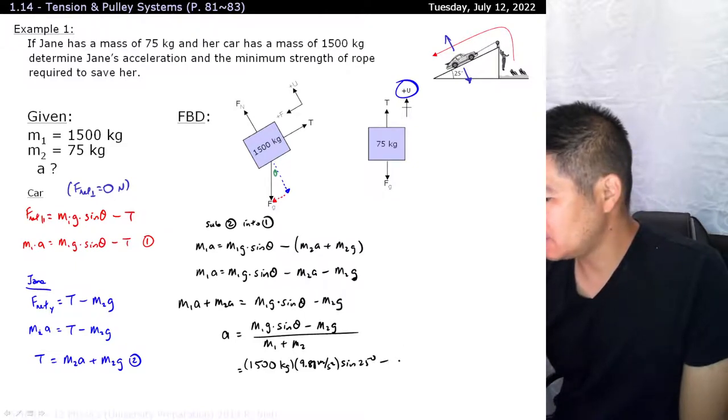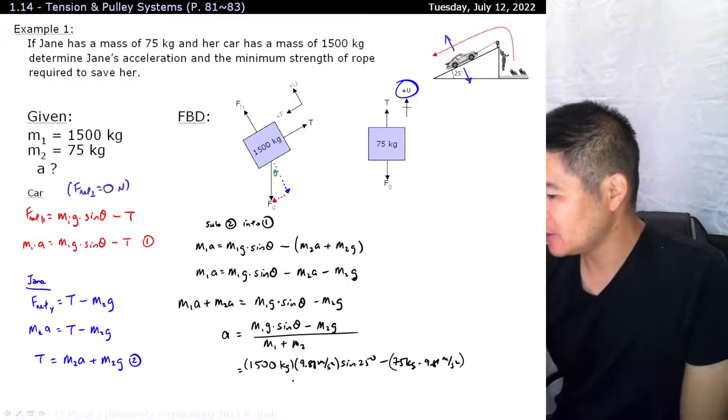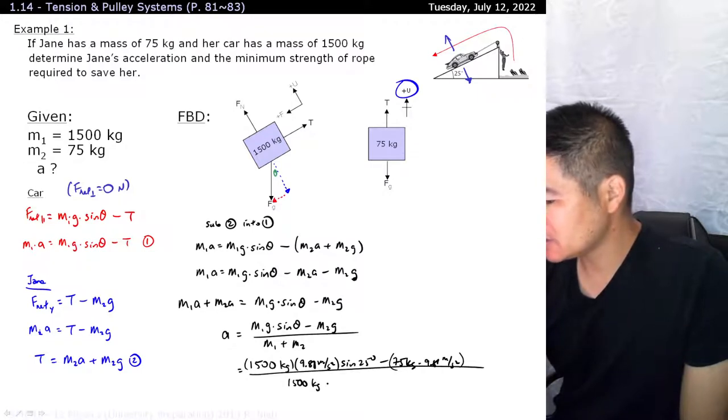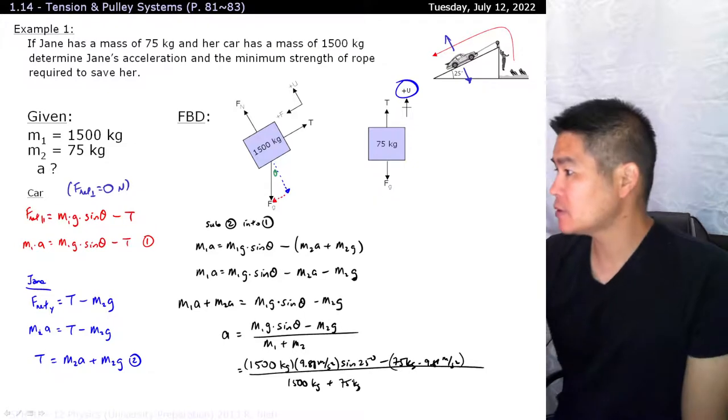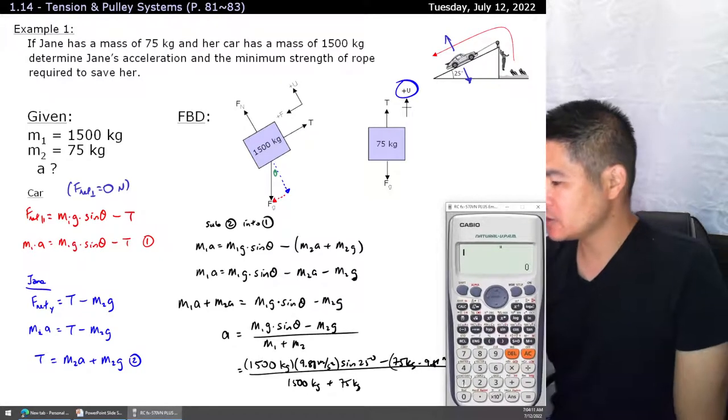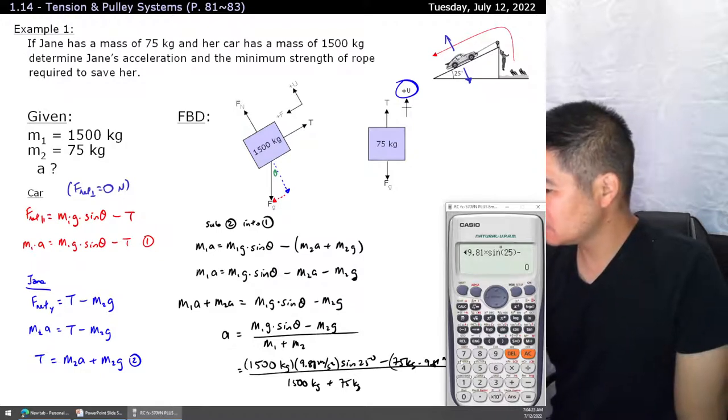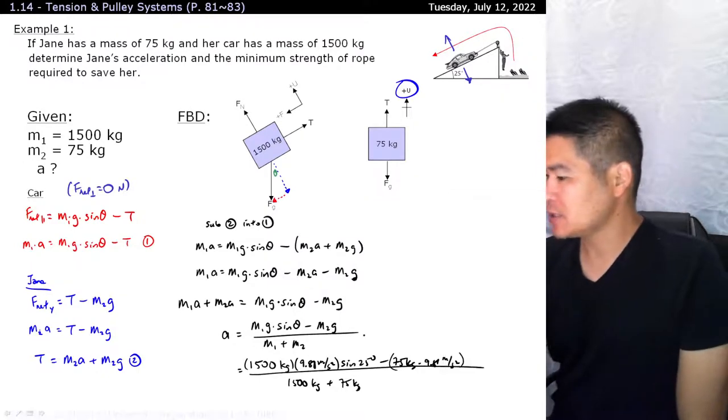So let me sub in: 1500 kg times 9.81 m/s² times sine of 25 degrees minus M2, which is Jane of 75 kilograms times 9.81 meters per second squared, divided by 1500 kilograms plus 75 kilograms. Pull out our handy dandy calculator and let's crunch away.